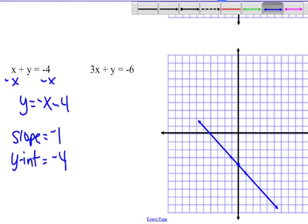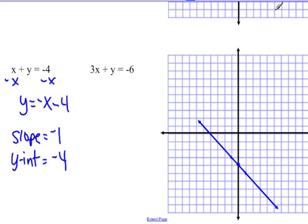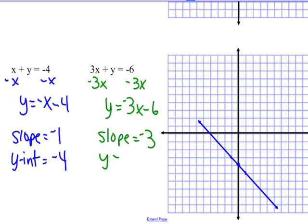Now to solve the system, we need to solve the other equation. Move that 3x over: y equals negative 3x minus 6. Our slope is negative 3, our y-intercept is negative 6. Start with our y-intercept first, down 6, on our point.